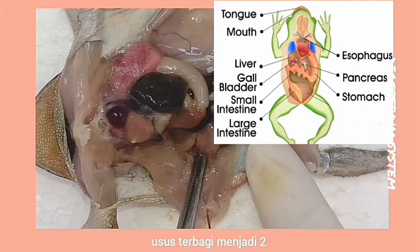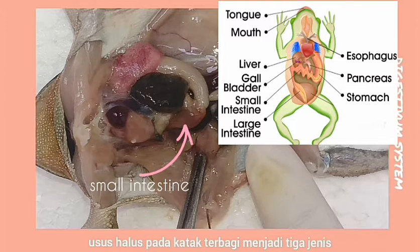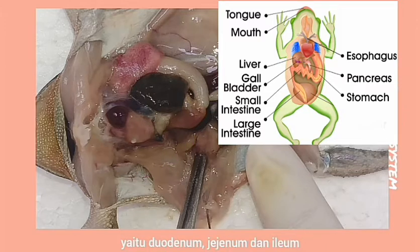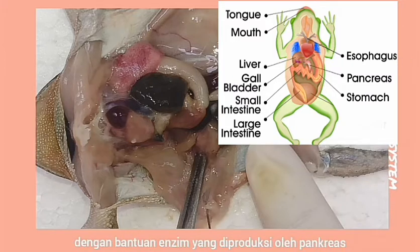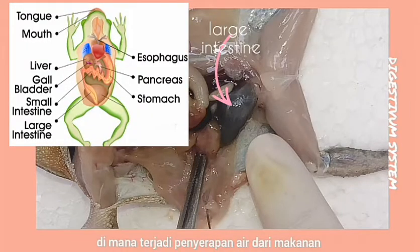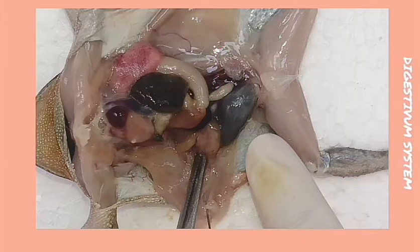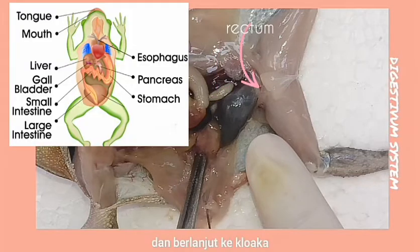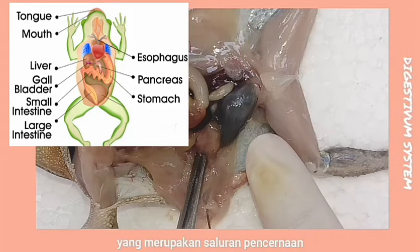The yellow pancreas is attached between the stomach and duodenum. The pancreas functions to produce enzymes and hormones which lead to the duodenum. The intestine is divided into two parts: the small intestine, which in frogs is divided into the duodenum and ileum where absorption of food nutrients occurs with help of pancreatic enzymes; and the large intestine, where absorption of water from food occurs.